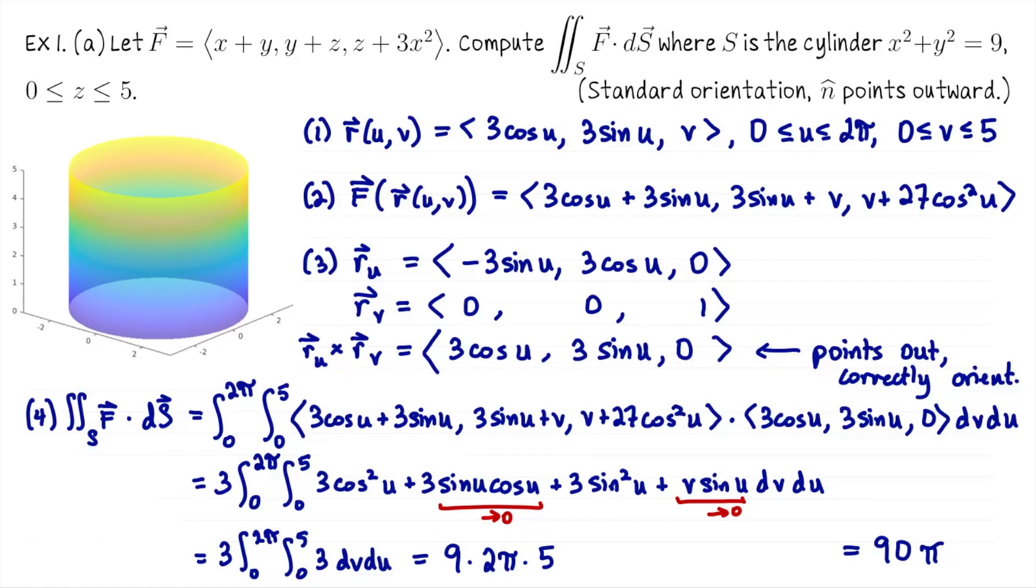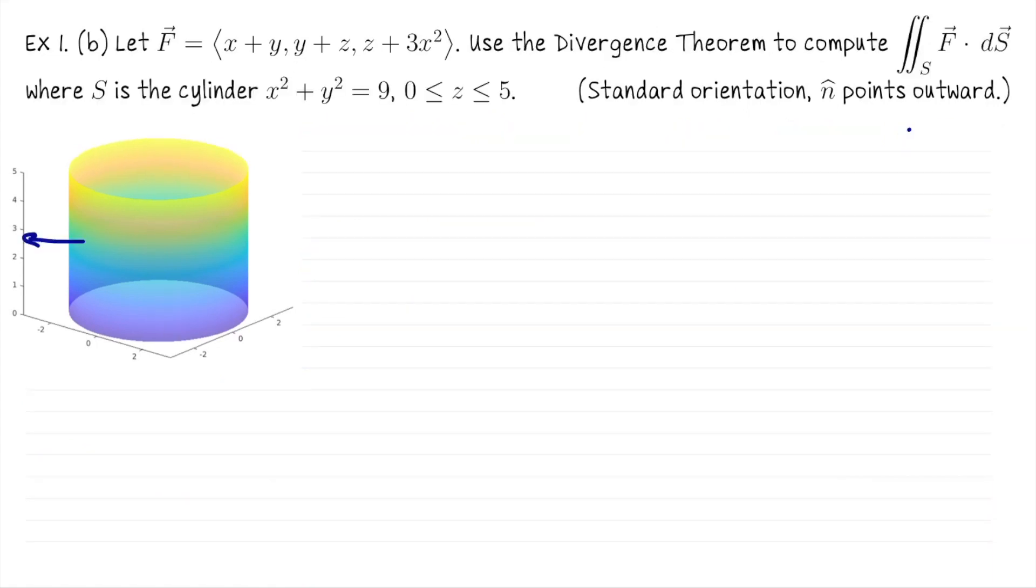So the flux of the vector field out of the cylinder is 90π. At the moment, this has not been set up in a way that immediately lends itself to the divergence theorem. But let me show you how we're going to apply the divergence theorem in this context. I would like to recompute the flux integral, but this time, instead of computing that flux integral directly, I'm going to set this up as a divergence theorem problem.